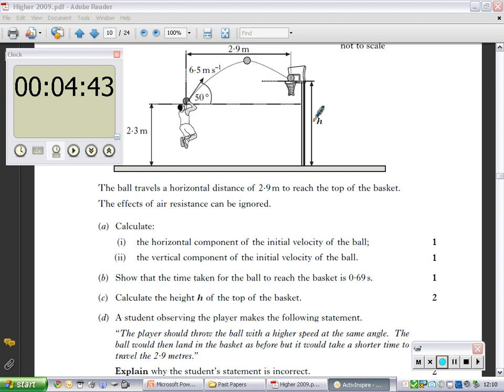Calculate the horizontal component of the initial velocity of the ball, the vertical component of the initial velocity of the ball. You know the motion of the ball from here, and you know that's 50 degrees along the bottom. You must put the end of one arrow onto the start of the other. That is your horizontal component, that is your vertical component. This is a right angle triangle. Use your Pythagoras. 6.5 is the hypotenuse. That's fairly straightforward, it's one mark each.